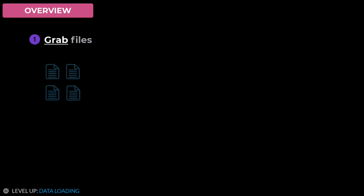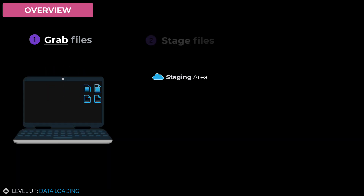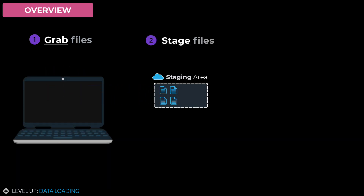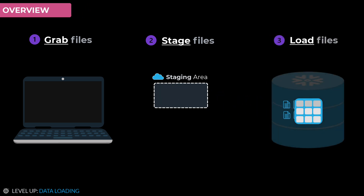Loading data into Snowflake involves three simple steps. We grab the files we want to load into Snowflake. We stage those files into Cloud Storage. And lastly, we load those staged files into Snowflake's tables.